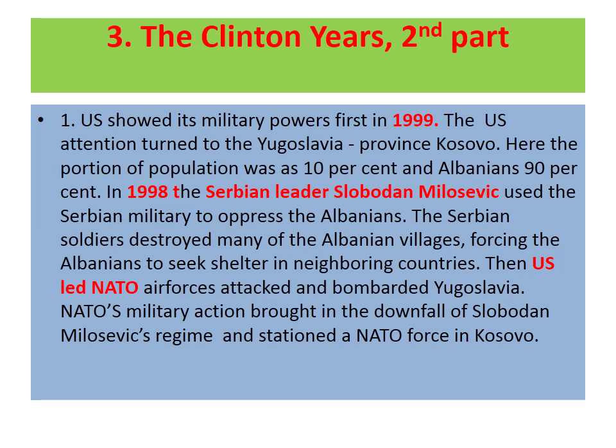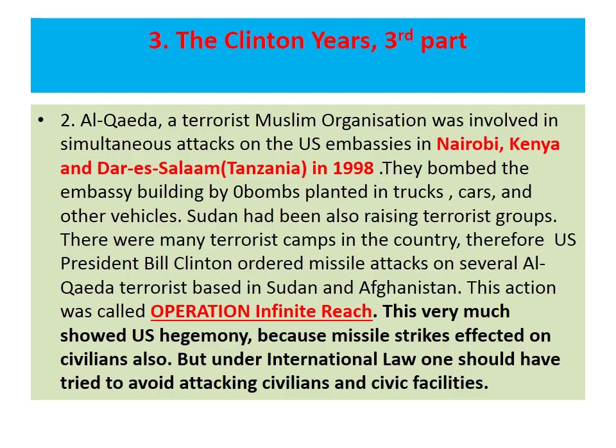The US showed its military power during the Clinton years. Firstly, in 1999, US attention turned to the Yugoslavia province of Kosovo, where the population was 10% Serbian and 90% Albanian. In 1998, Serbian leader Slobodan Milosevic used the Serbian military to oppress the Albanians, destroying many Albanian villages and forcing Albanians to seek shelter in neighboring countries. The US then led NATO forces to attack and bombard Yugoslavia. NATO's military action brought about the downfall of Milosevic's regime and the stationing of a NATO force in Kosovo.